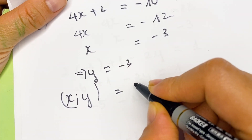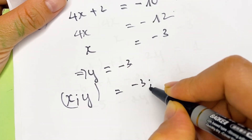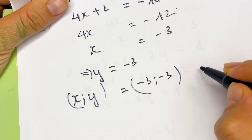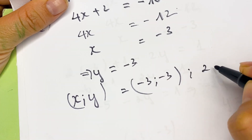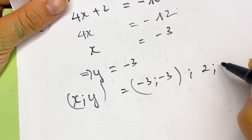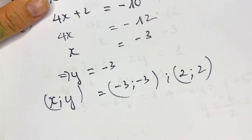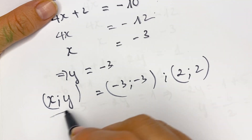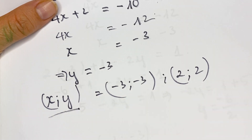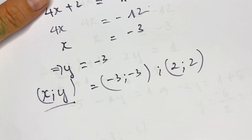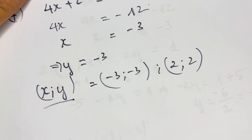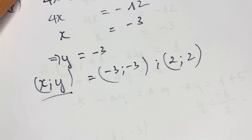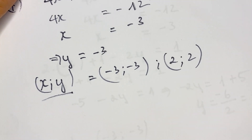So therefore, we have two pairs of x and y. The solutions are (x, y) equals (negative 3, negative 3) and (x, y) equals (2, 2). Thank you for watching my video, don't forget to subscribe to my channel. Love you all!